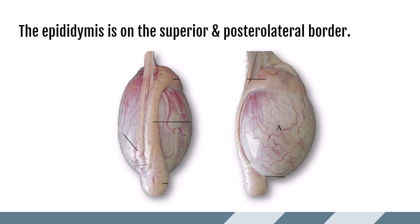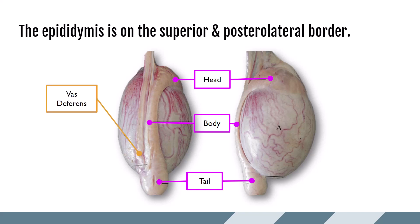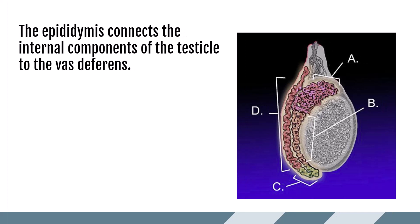The epididymis is an extra-testicular convoluted tube that wraps around the superior and posterolateral portion of the testicle. It is divided into the head, body, and tail, and connects to the vas deferens. The head receives the efferent ductules from the testicle and sits like a hat on the superior pole. The small tubules inside the head converge to form one tube — the ductus epididymis — which travels through the body and tail, eventually connecting to the vas deferens. This is the pathway for sperm to leave the scrotum. The body is more lateral and posterior to the testicle, and the tail wraps slightly inferior but remains mostly posterior.